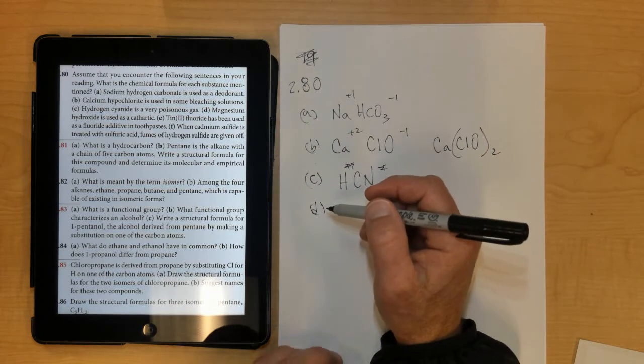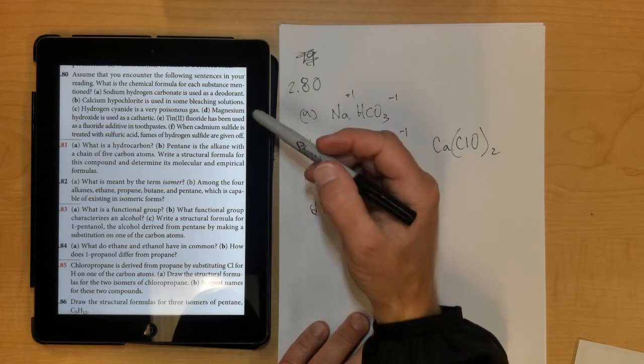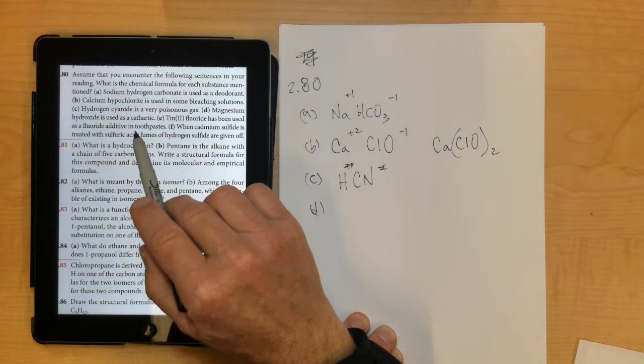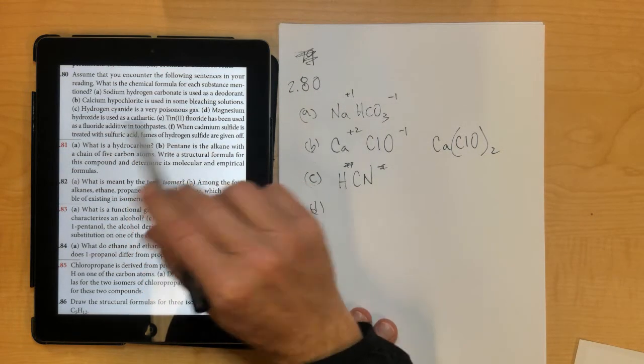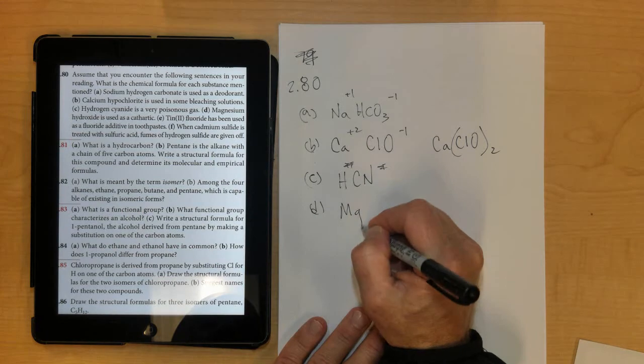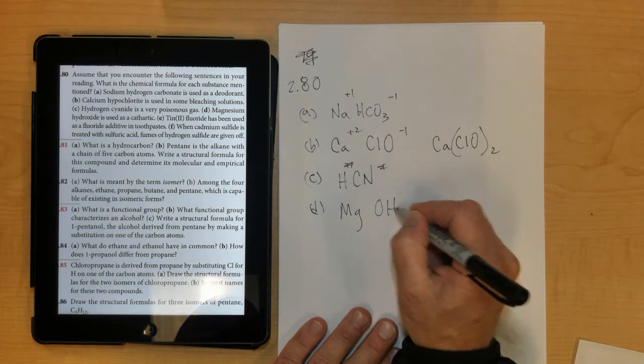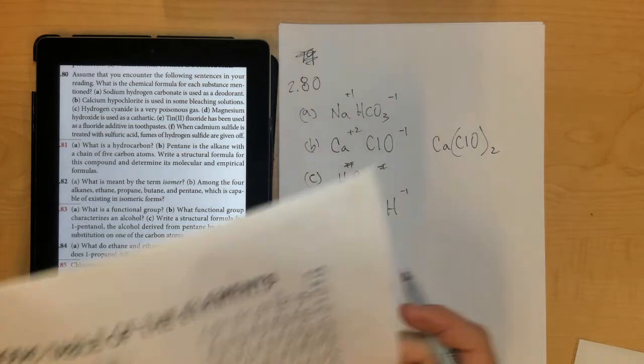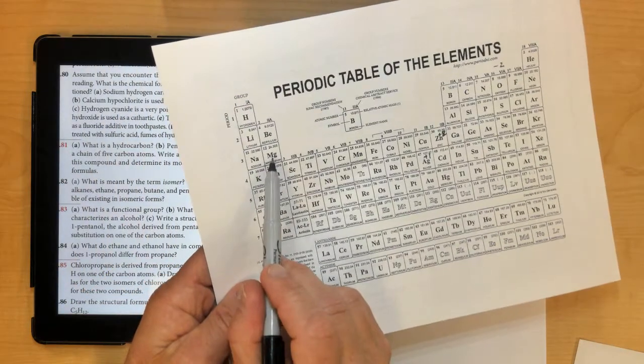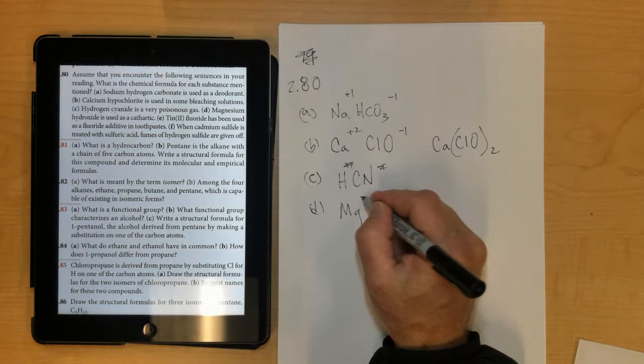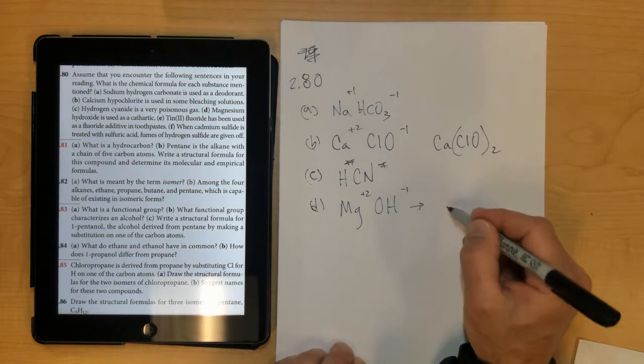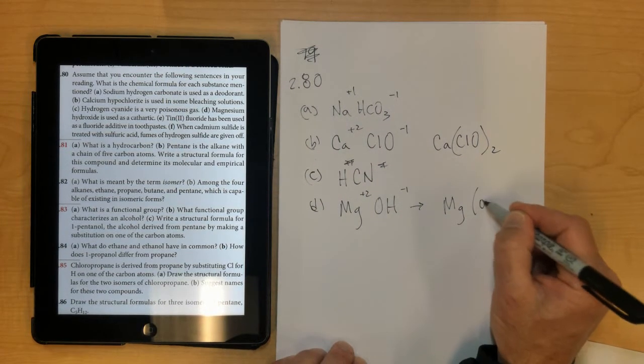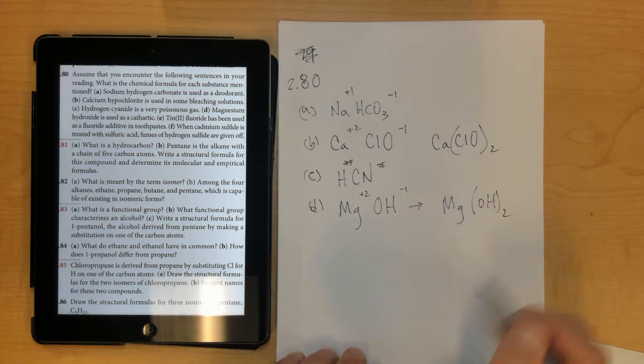Letter D, magnesium hydroxide is used as a cathartic, so magnesium hydroxide would be Mg, and then hydroxide is OH, and you memorized hydroxide as negative 1. And if you look on the front, here's magnesium, it's in group 2, so it's positive 2. So when I write the formula for it, it would be Mg, don't forget the parentheses, OH2, two of those.